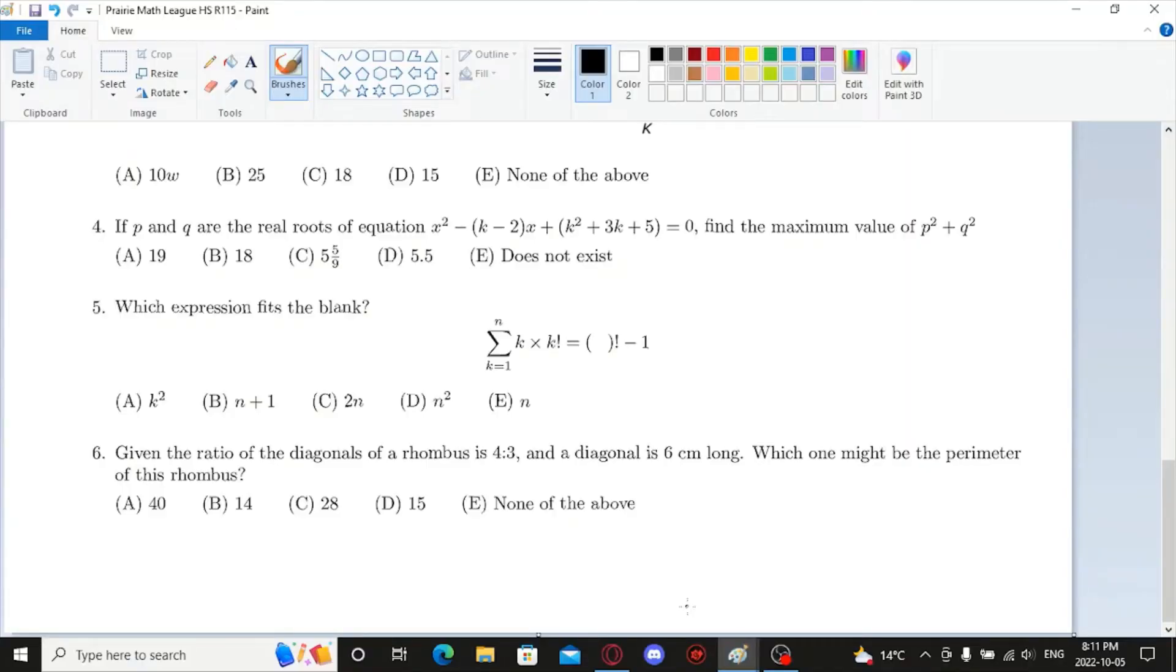Round 115, Question 5. Which expression fills the blank? For question 5, we have this equation, which is the sum of the series k multiplied by k factorial is equal to blank factorial minus 1. Given to us are 5 answers for what fits in the blank: k squared, n plus 1, 2n, n squared, and n.